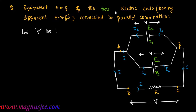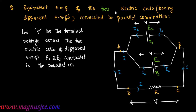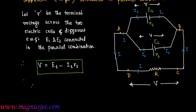Let V be the terminal voltage across the two electric cells of different EMFs E1 and E2 connected in parallel combination between the two points A and B. Therefore, V equals E1 minus I1·R1, which is the potential difference or terminal voltage across the first electric cell of EMF E1. From that, we can find current I1 generated from the electric cell of EMF E1.